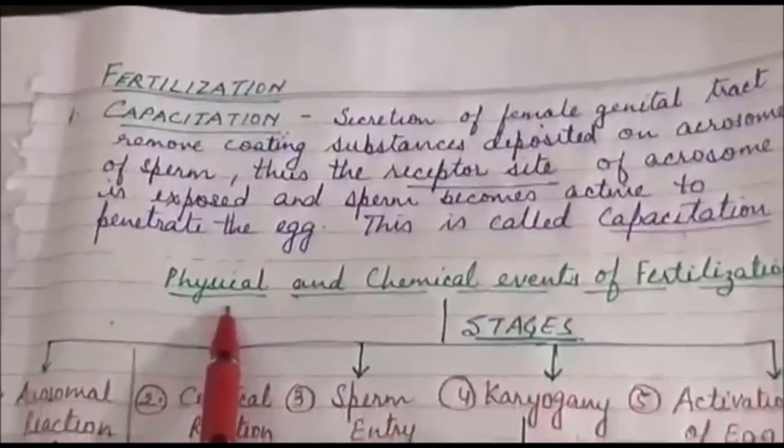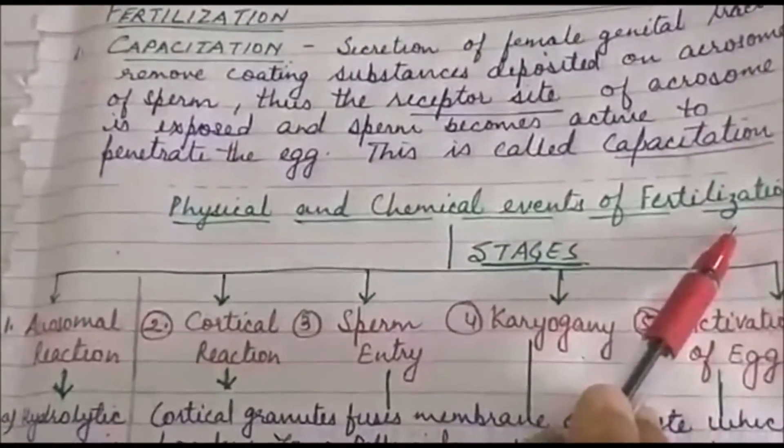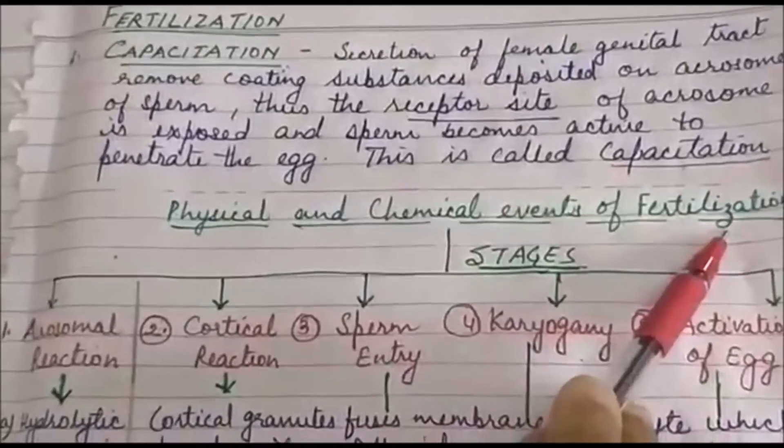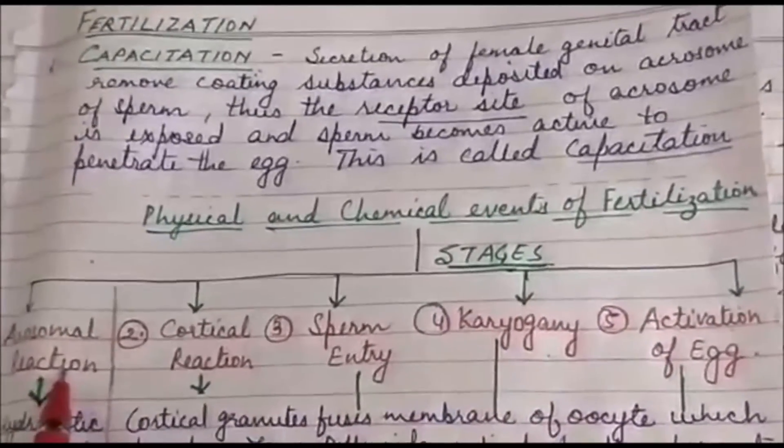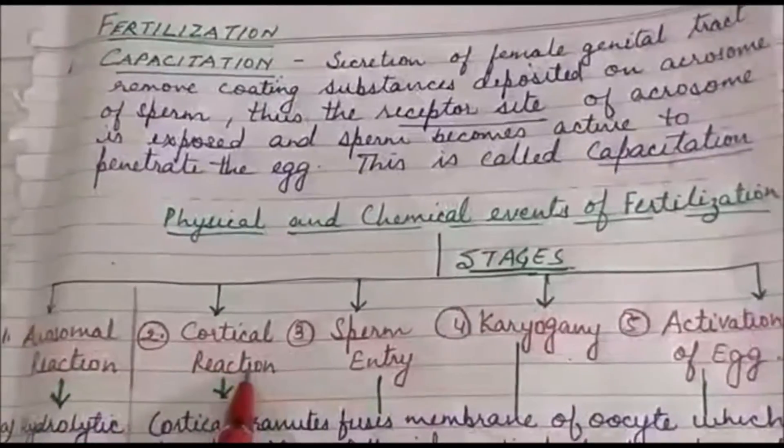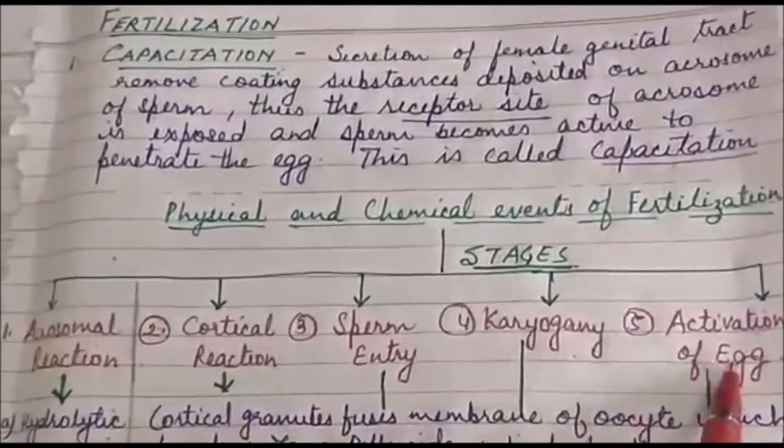Now let us study the physical and the chemical events of fertilization. This physical and the chemical events of fertilization can be divided into five stages or five steps: acrosomal reaction, cortical reaction, sperm entry, karyogamy, and activation.